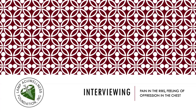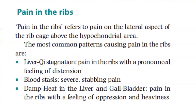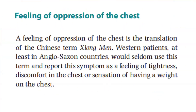Interviewing for pain in the ribs and feeling of oppression in the chest. Pain in the ribs refers to pain on the lateral aspect of the ribcage, above the hypochondrial area. The most common patterns causing pain in the ribs are: liver chi stagnation, with pain and pronounced feeling of distension; blood stasis, with severe stabbing pain; and dampness in liver and gallbladder, with pain and a feeling of oppression and heaviness.